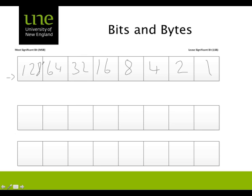So we want to represent the number 9. That requires an 8 plus a 1 to give us 9. So our bit string to represent the number 9 would look like this. The number 9 is a tab character in our ASCII character set.